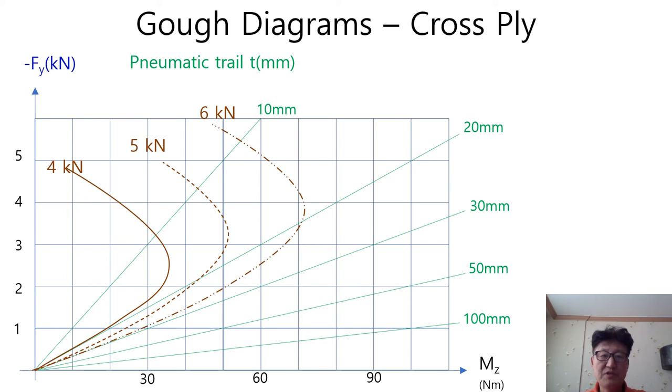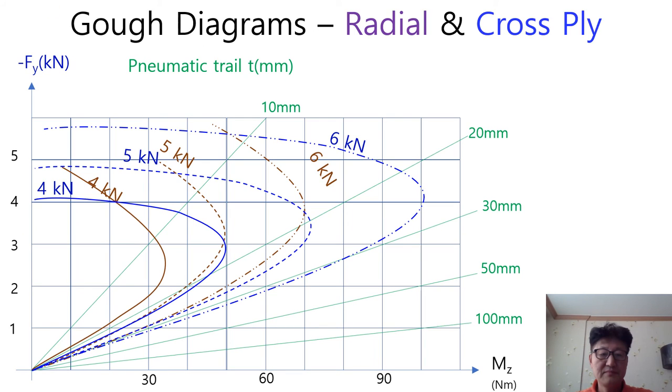In the same procedure, we can get the GO diagram for cross-ply tire for various tire normal forces, 4 kN, 5 kN, 6 kN, and so on. We can get this graph by putting all the data set for both radial and cross-ply tire having the same diameter. In the beginning range of side-slip angle, self-aligning moment of cross-ply tire is less than that of radial-ply tire because cross-ply tire has a shorter pneumatic trail than radial tire does, as explained in the previous video.